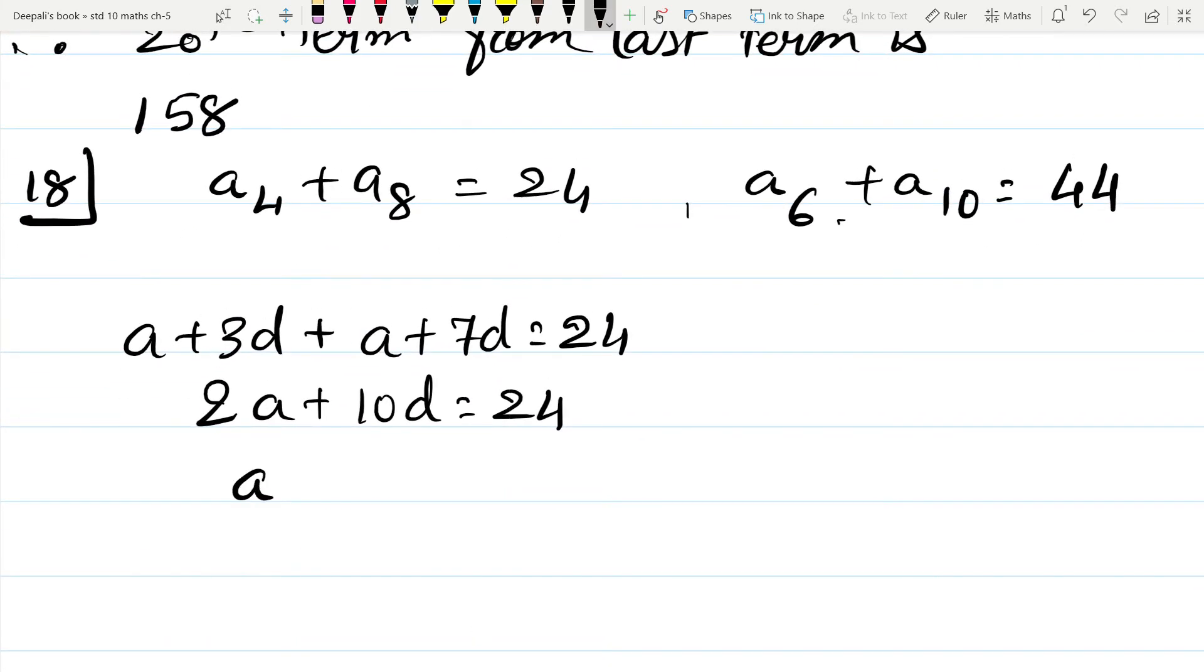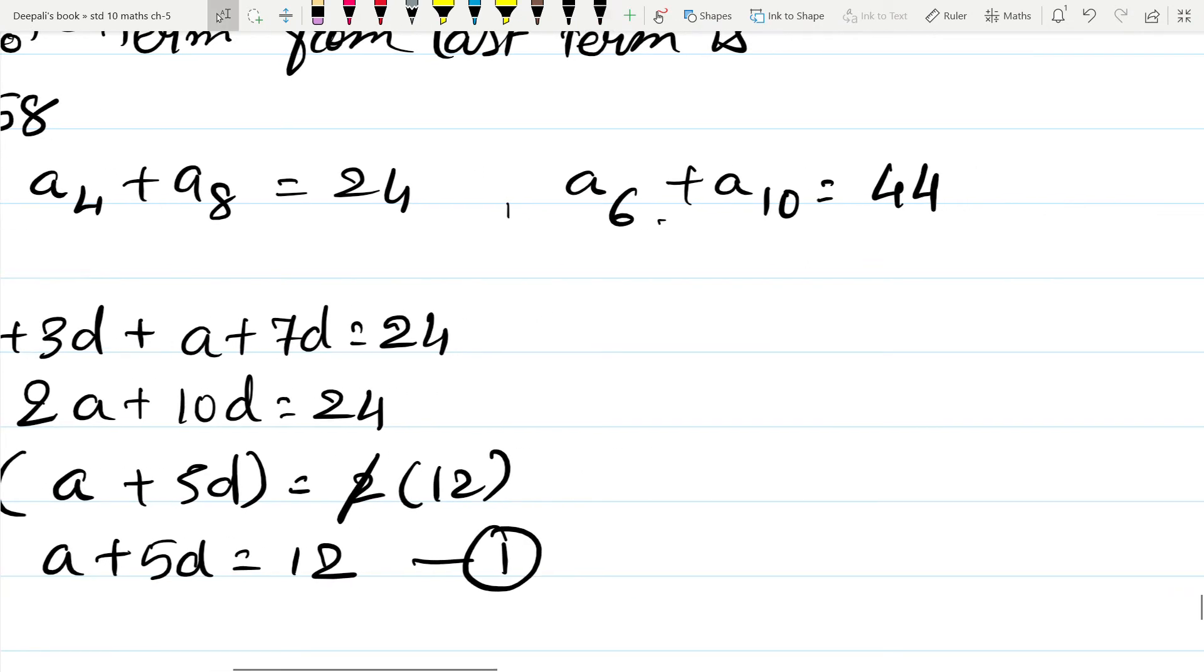And A6 plus A10 is equal to 44. Now if I solve these two equations, I get A plus 3D plus A plus 7D is equal to 24. That is 2A plus 10D is equal to 24.